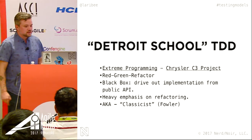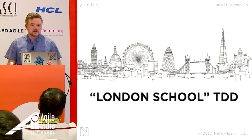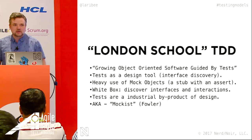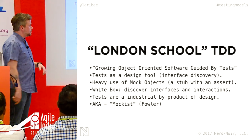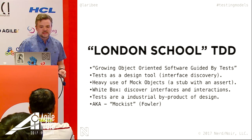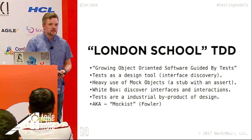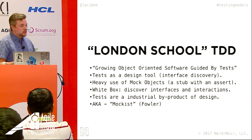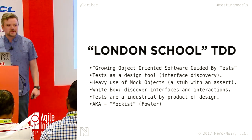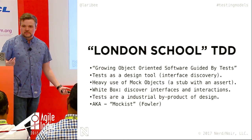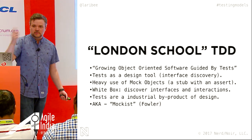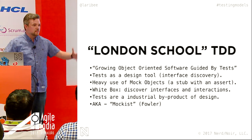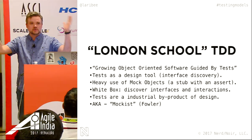London School TDD came a few years later — using mocks and stubs to drive out your design. This is much more of a design tool, all about designing object interactions — the pinnacle of OO design in my mind. The main book is 'Growing Object-Oriented Software Guided by Tests' by Nat Price and Steve Freeman. Heavy use of mock objects — if a certain call you set up doesn't happen, the test will fail. Your tests tend to look a lot like your implementation code. And if you're not doing this test-first, mock objects make zero sense.